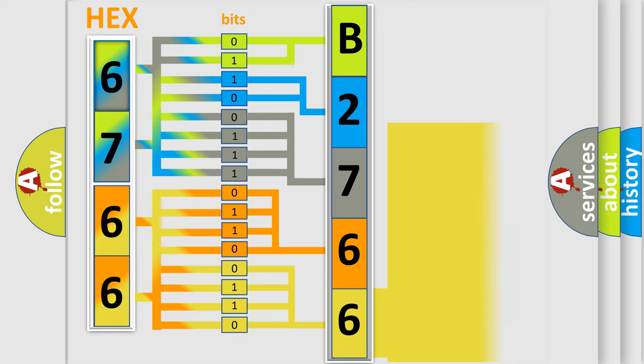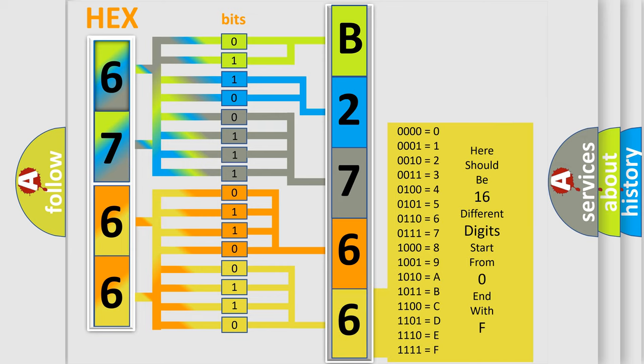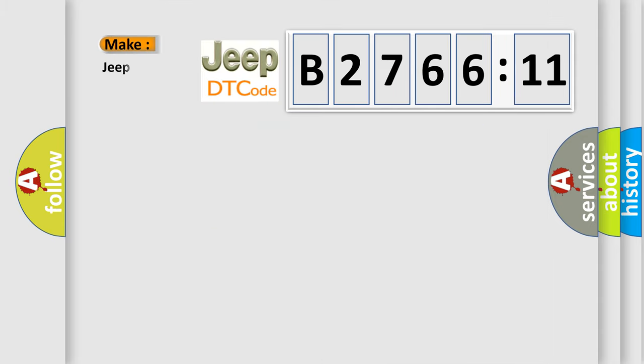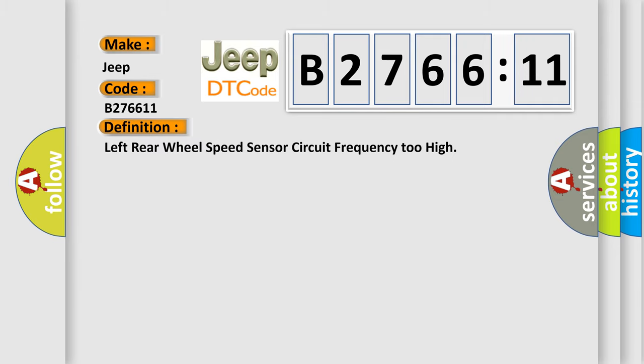A single byte conceals 256 possible combinations. We now know in what way the diagnostic tool translates the received information into a more comprehensible format. The number itself does not make sense to us if we cannot assign information about what it actually expresses. So, what does the diagnostic trouble code B276611 interpret specifically for Jeep car manufacturers?